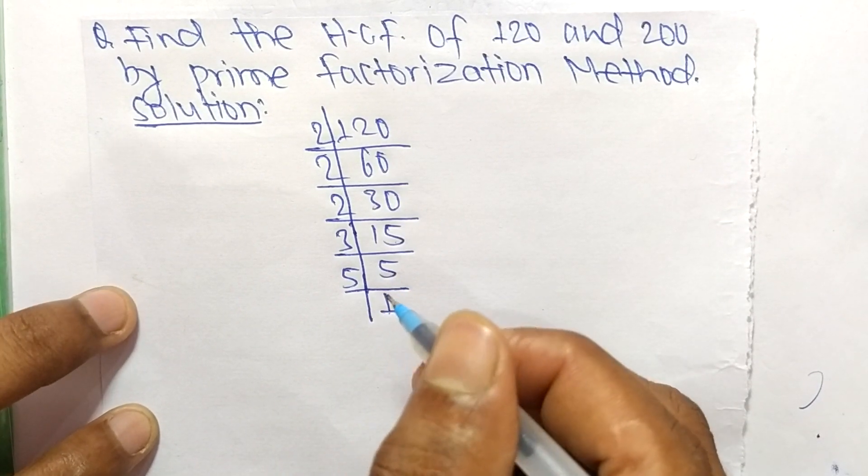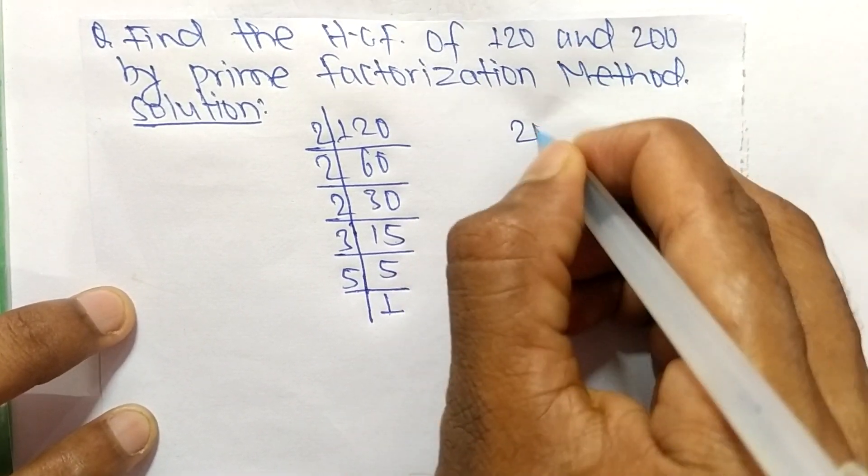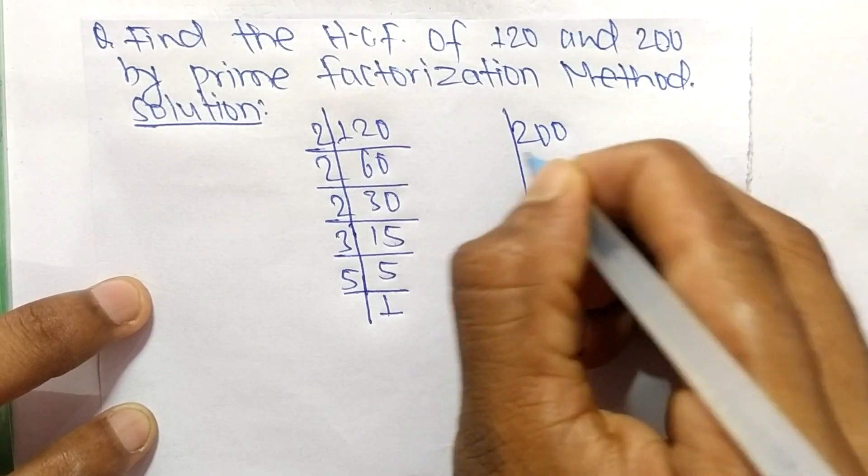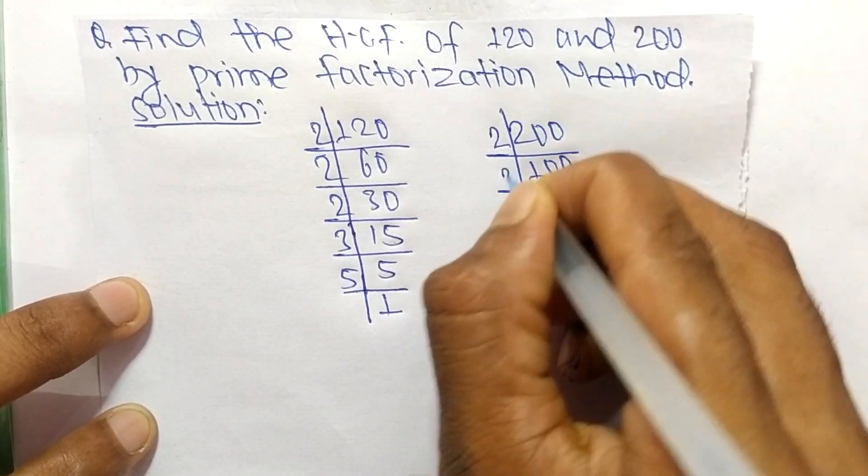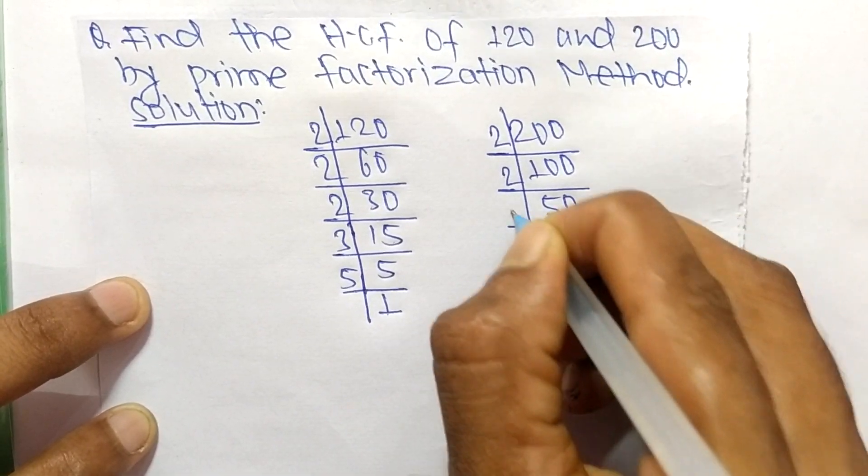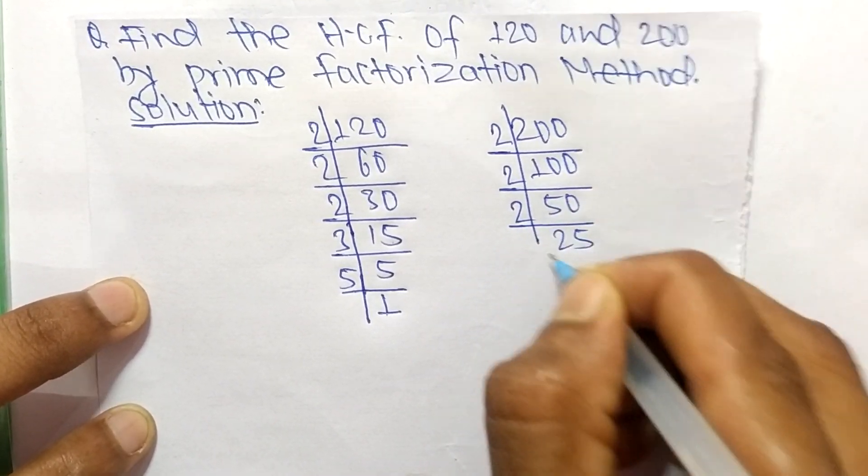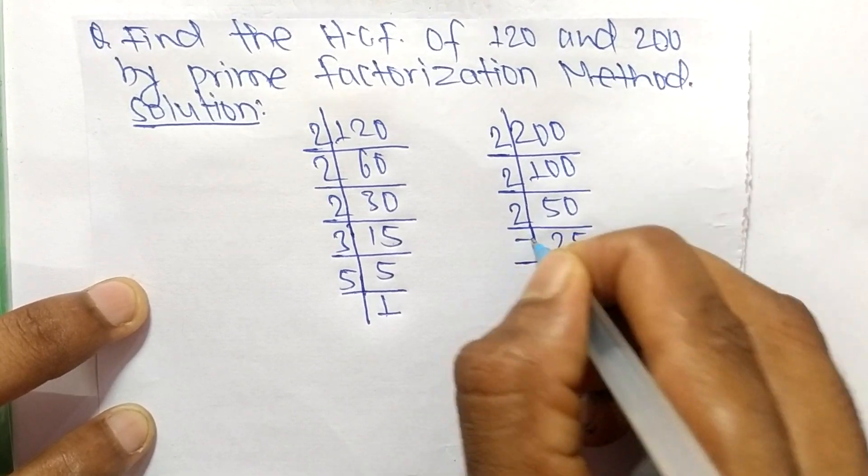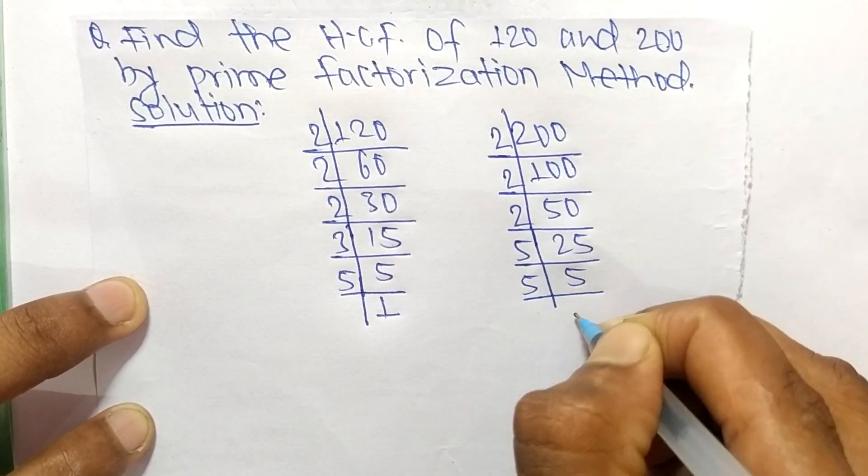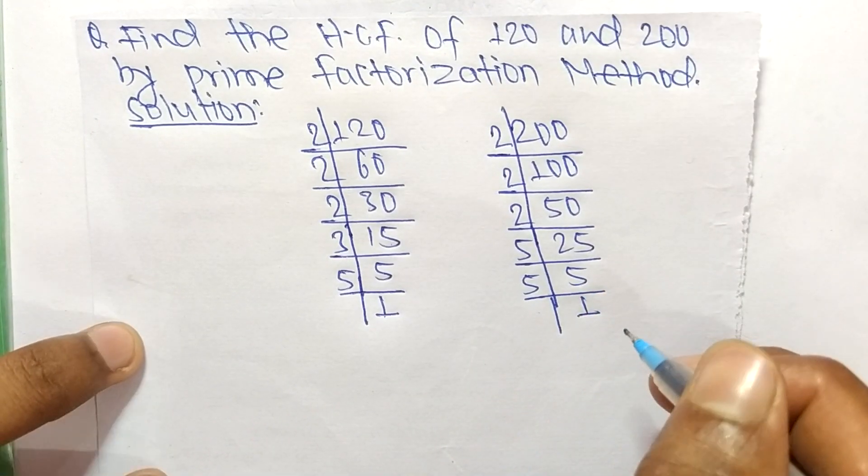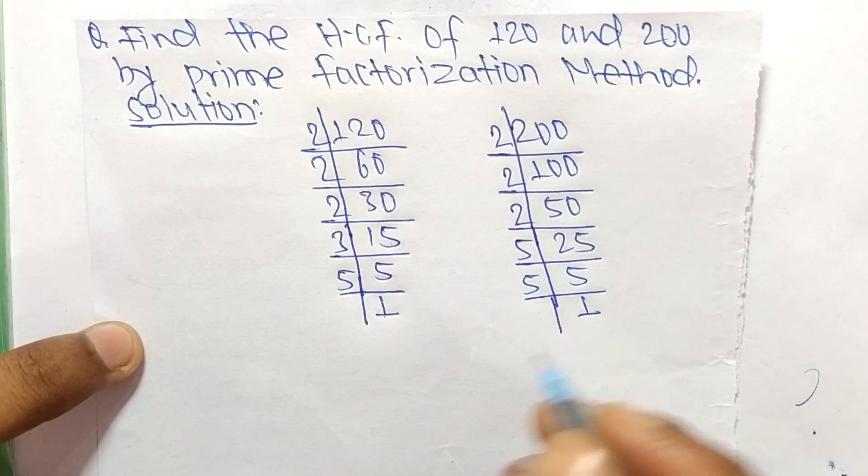The prime factors of 200 are: 2 times 100 equals 200, 2 times 50 equals 100, 2 times 25 equals 50, 5 times 5 equals 25, and 5 times 1 equals 5.